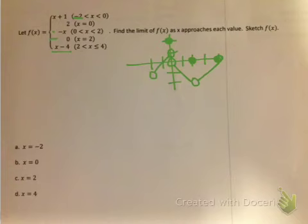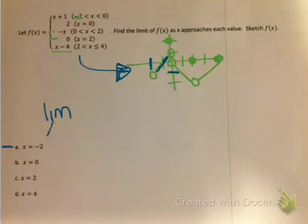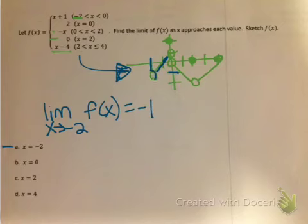The first case: the limit as x approaches negative 2. Negative 2 is over here, and the graph is only to the right of this, so I only have to worry about from the right. As I get closer and closer coming down this line segment, I'm getting closer to negative 1. So the limit as x approaches negative 2 of the function is negative 1. Even though it's not defined there, a limit doesn't have to be defined — it's just what am I approaching.